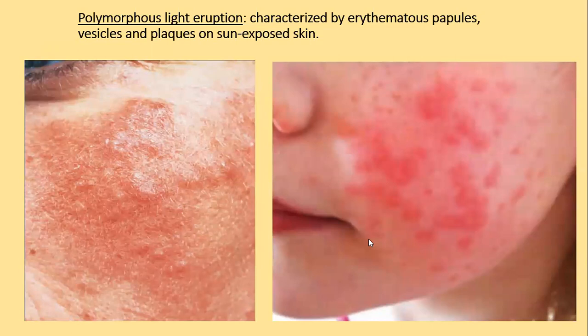Polymorphic light eruption is characterized by erythematous papules, vesicles, and plaques on sun-exposed areas. You can see the vesicles, the papules, and coalescing to form plaques.